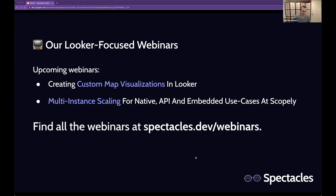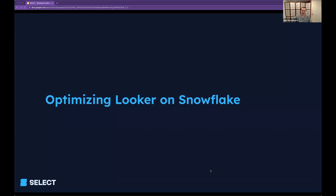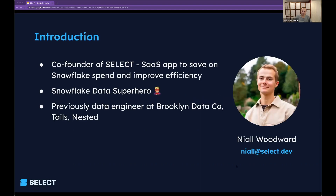Thank you, Dylan. Thanks very much for coming along, everyone. We're going to switch over from Spectacles Purple to Select Blue. So yeah, optimizing Looker on Snowflake. I'm going to do a quick introduction first. My name's Niall, I'm a co-founder at Select. We're building a SaaS app to help people who are using Snowflake get better return on investment, reduce their spend, improve efficiency, and get the best performance they can. I've recently become a Snowflake Data Superhero — which is an amusing title, you can Google it. And previously I was a data engineer at Brooklyn Data Co., and before that at Tails and Nested, two startups in London.